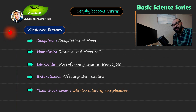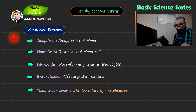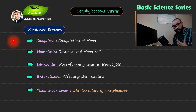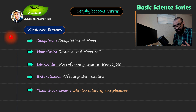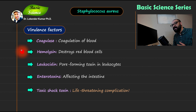Moving to the next slide, I am discussing virulence factors associated with Staphylococcus aureus. I have picked the most important ones and will cover each in separate detailed videos. The first virulence factor is coagulase — I have already made a video on the coagulase test explaining this enzyme in detail, including how to perform slide and tube coagulase tests. Coagulase is responsible for coagulation of blood, which is why it is an important virulence factor.